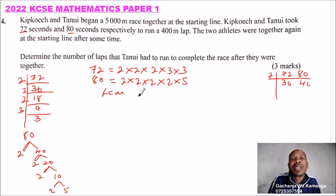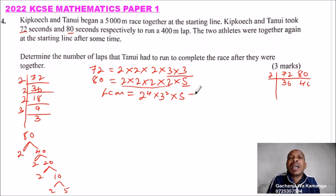LCM, we get LCM by getting the factors with the highest index or power. So this is 2 to power 4, and we take 3 to power 2, times 3 squared, and we take 5. So we take 5. So when you compute that using your calculator, you'll be able to get 720 seconds.